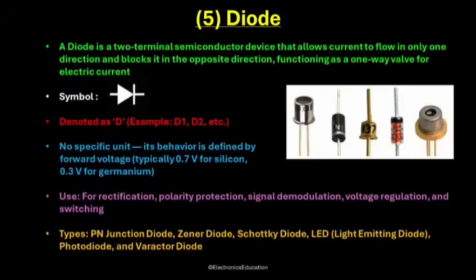The symbol of a diode is shown as a triangle pointing toward a line. The triangle represents the direction of conventional current flow, and the line represents the blocking side, called the cathode. The other end is called the anode. Diodes are labeled with the letter D, followed by a number such as D1, D2, etc. There's no specific unit for a diode, but its behavior is defined by its forward voltage drop. For a silicon diode, this is about 0.7 volts, and for a germanium diode, it's around 0.3 volts.